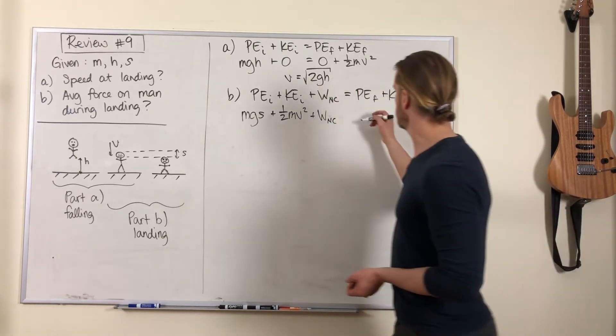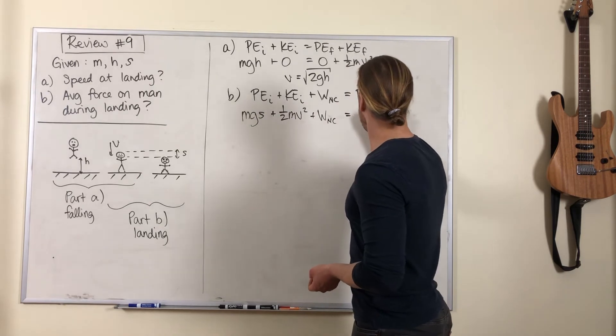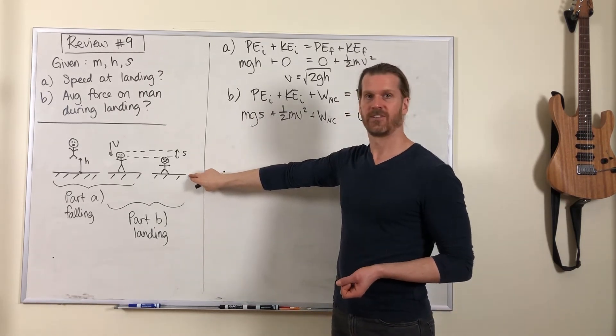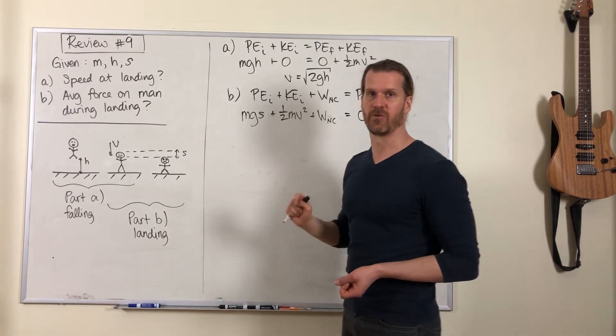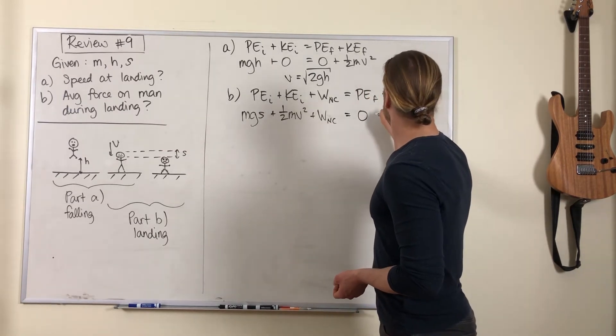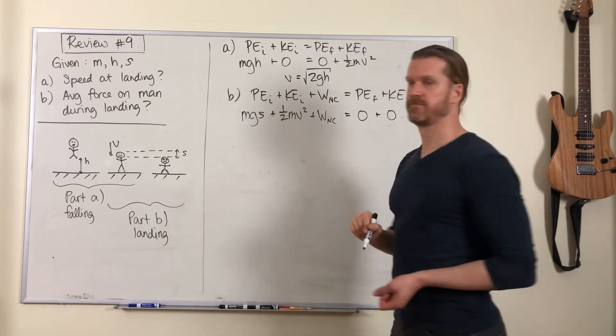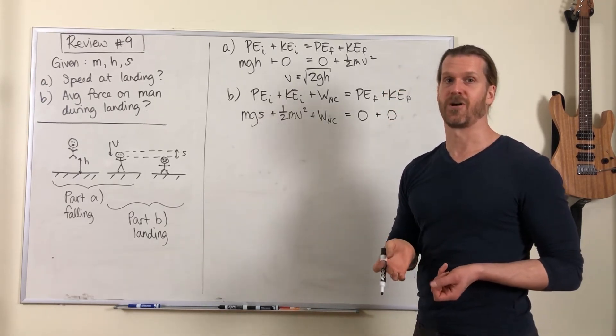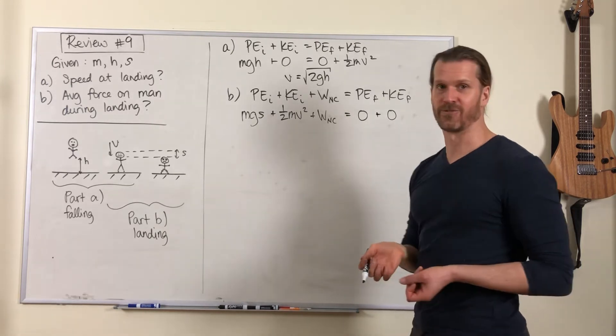We've got this work done by the non-conservative force which we'll evaluate in a second. PE final is zero because we're considering this last picture to be zero potential energy, and KE final is zero, he's come to a stop in an injured kind of way.